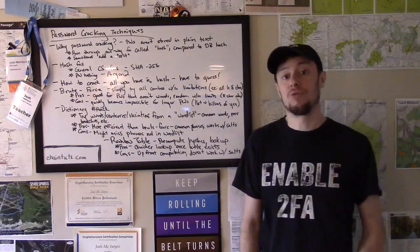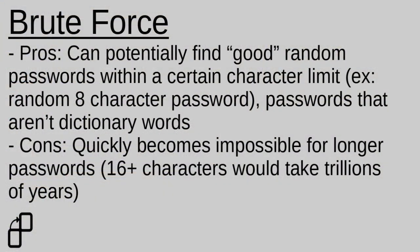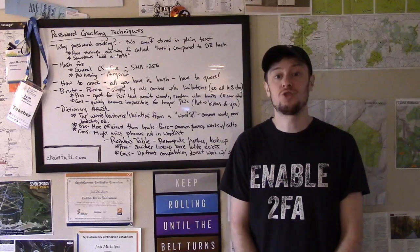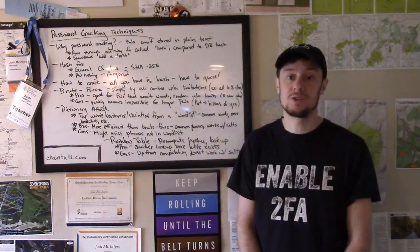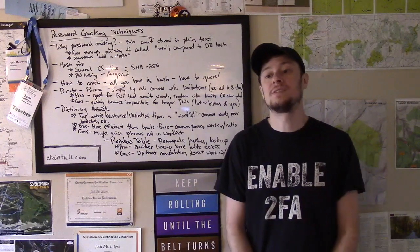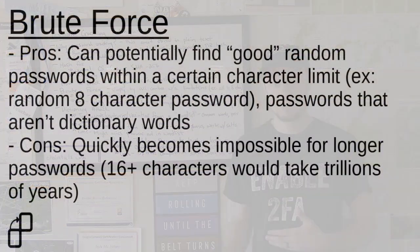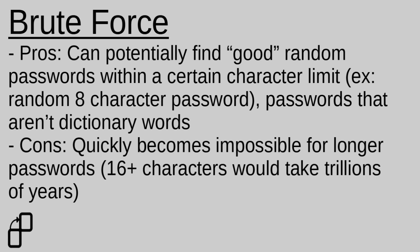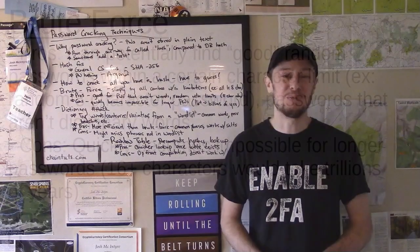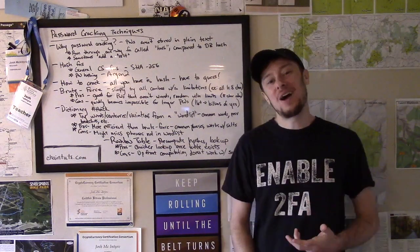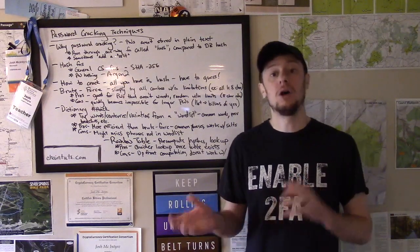Brute forcing has some pros in that it can be really good at finding more random passwords within some reasonable limitation. If you know a system has eight character passwords and a user chooses a truly random eight-character string, brute forcing will eventually find that password because it's going to try all possible combinations. A serious limitation of brute force is simply resource constraints — it becomes unwieldy to impossible for longer passphrases. For example, trying all possible 16-character passphrases could take trillions of years even with the world's best supercomputers. So we have to try more sophisticated techniques for finding those better, longer passphrases.